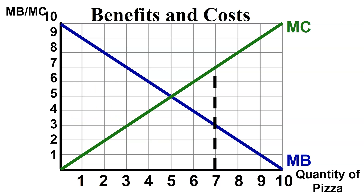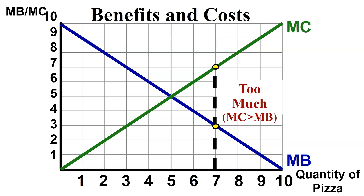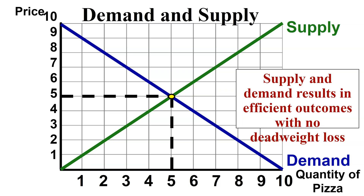If we eat too much — say seven slices instead of five — we go above and beyond our equilibrium. At that point, marginal benefit is less than marginal cost. Maybe we're nauseous, vomiting, or have indigestion. We've eaten too much, we're not content, and our marginal cost has exceeded our marginal benefit. Therefore we've over-allocated those resources.